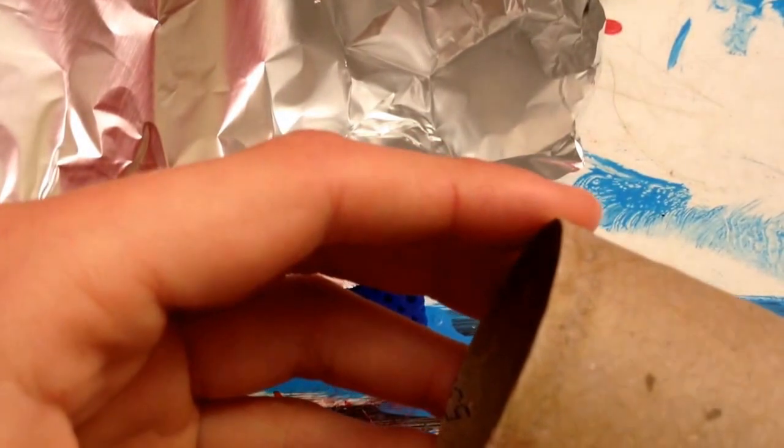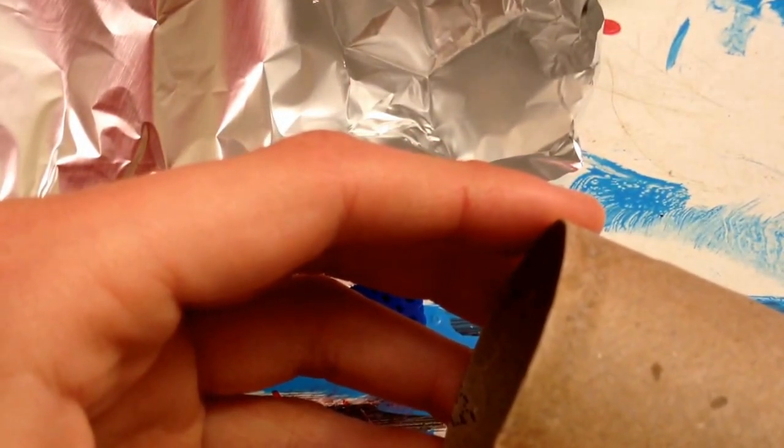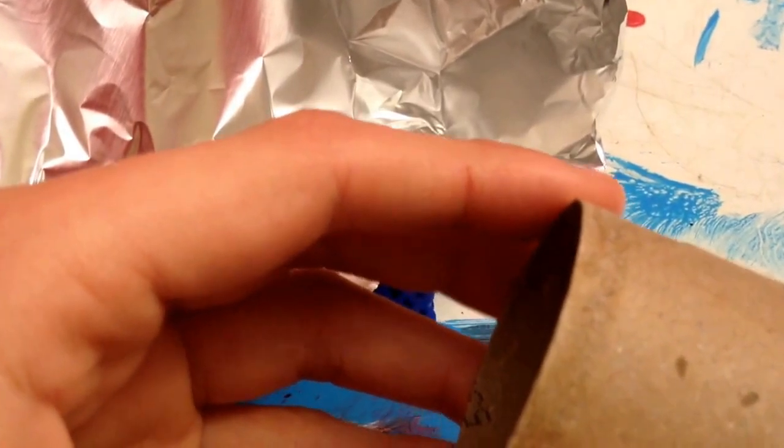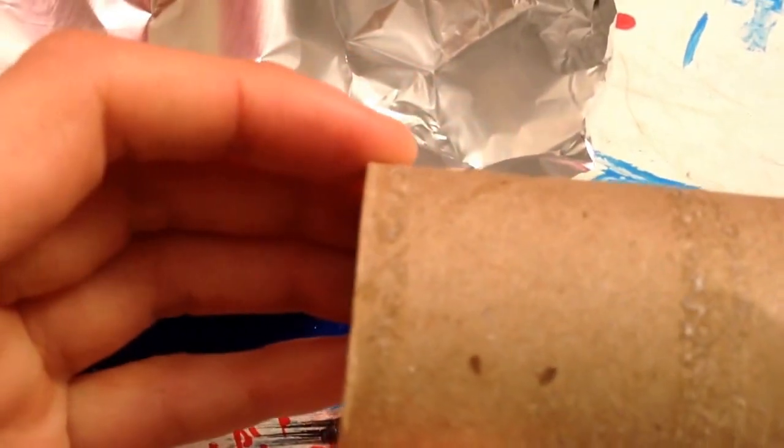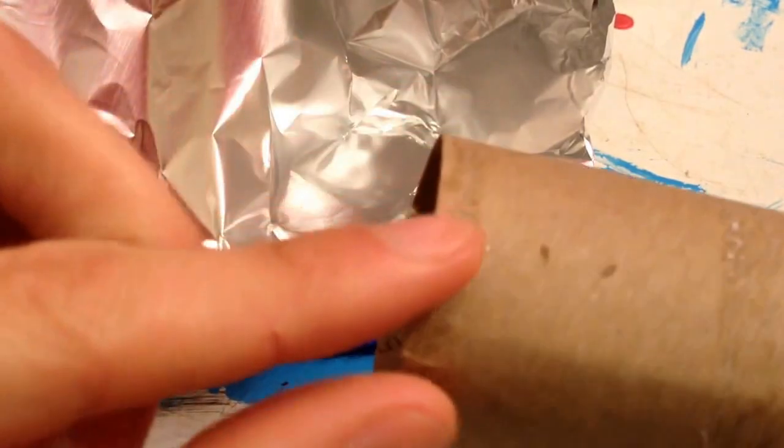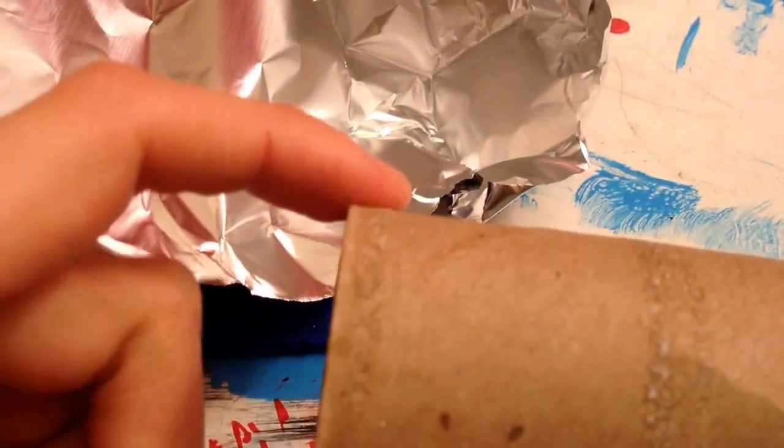So what I'm going to do is take my hot glue gun, and once it heats up, I'm going to put a thin layer of glue all around the edge here, not on the inside, not on the top, just as close to the edge as I possibly can.